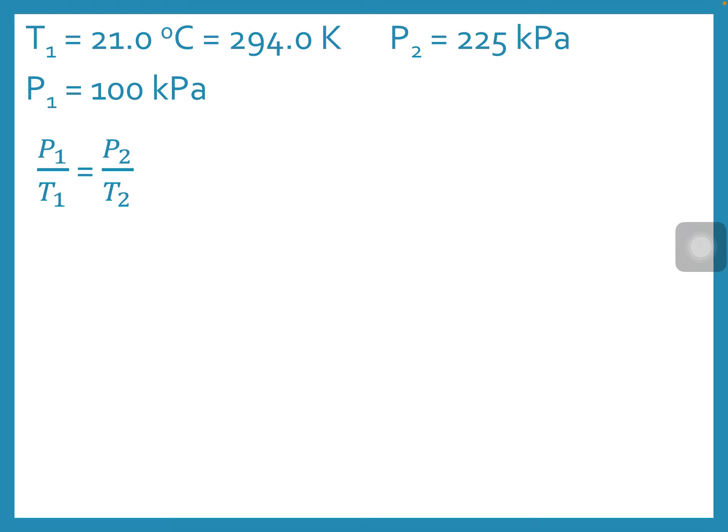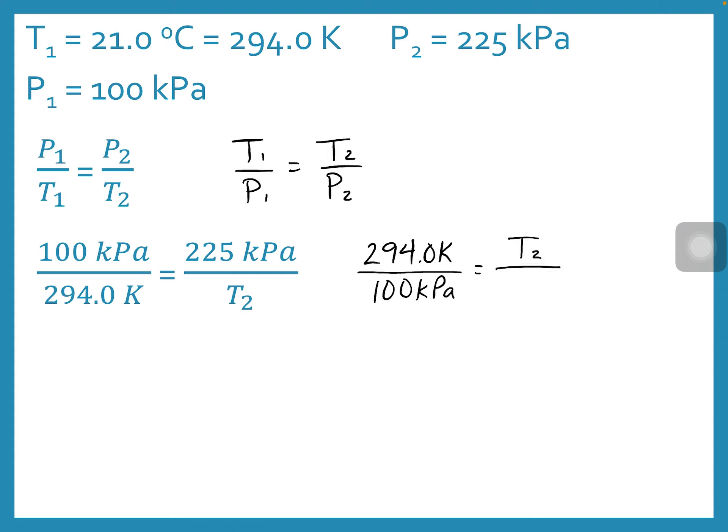And we saw before, when we are looking for whatever is in the bottom, so in this case temperature, we can flip these around to make solving quicker and easier. So in this case, I would have 294 Kelvin over 100 kilopascals equals T2 over 225. So to isolate final temperature, this is a division by 225, so I would multiply by 225 kilopascals on that side.